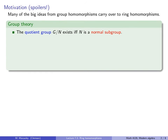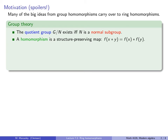Let's start off by reviewing some of the big ideas about group homomorphisms. First, the quotient group G mod N exists if and only if N is a normal subgroup. Next, a homomorphism between groups is a structure-preserving map, which means that f(xy) = f(x)·f(y) for all elements x and y in our group. The kernel of a homomorphism is a normal subgroup.